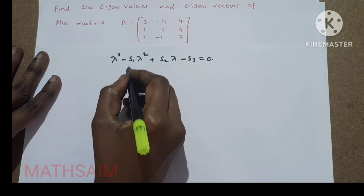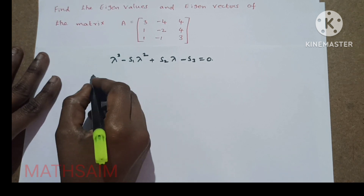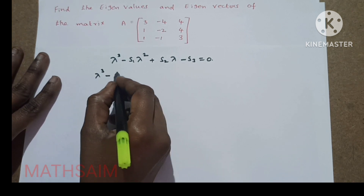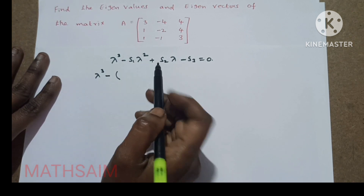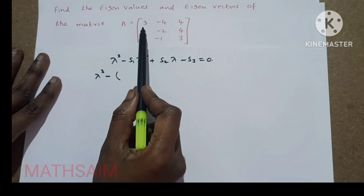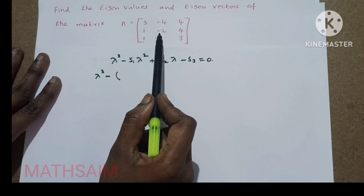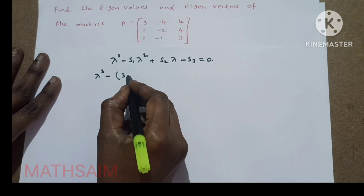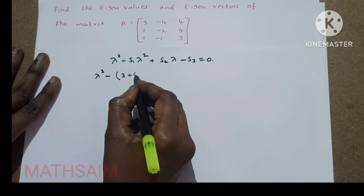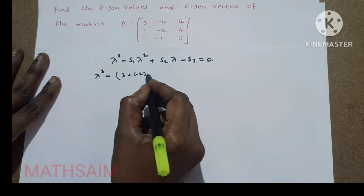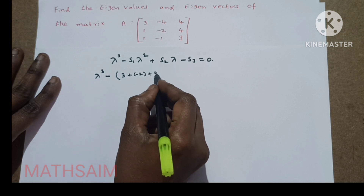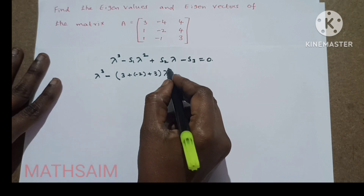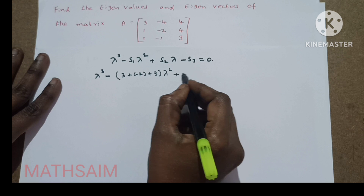So S1 is what? It is the sum of the main diagonal elements. The diagonal elements are 3, minus 2, and 3. So S1 is 3 plus minus 2 plus 3, giving us 4, into lambda squared plus...